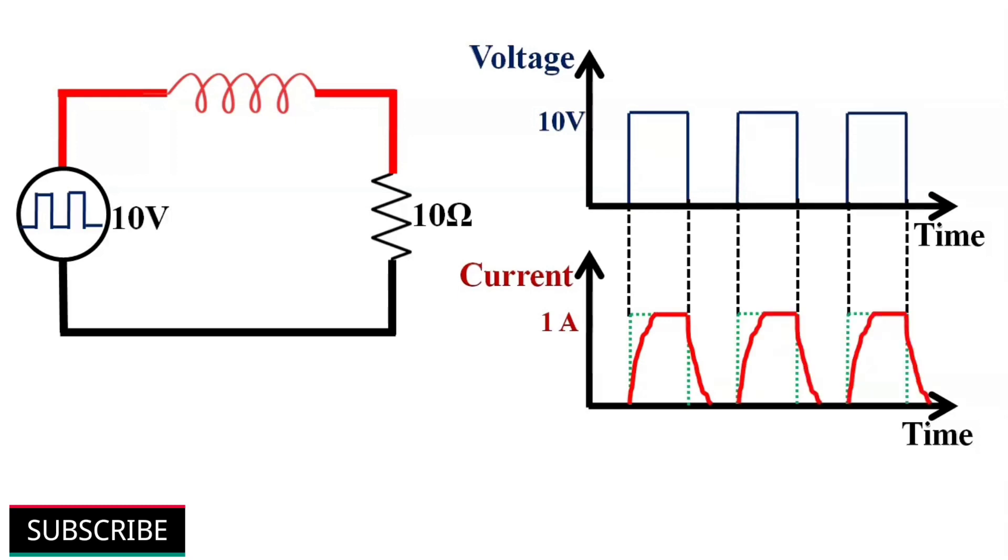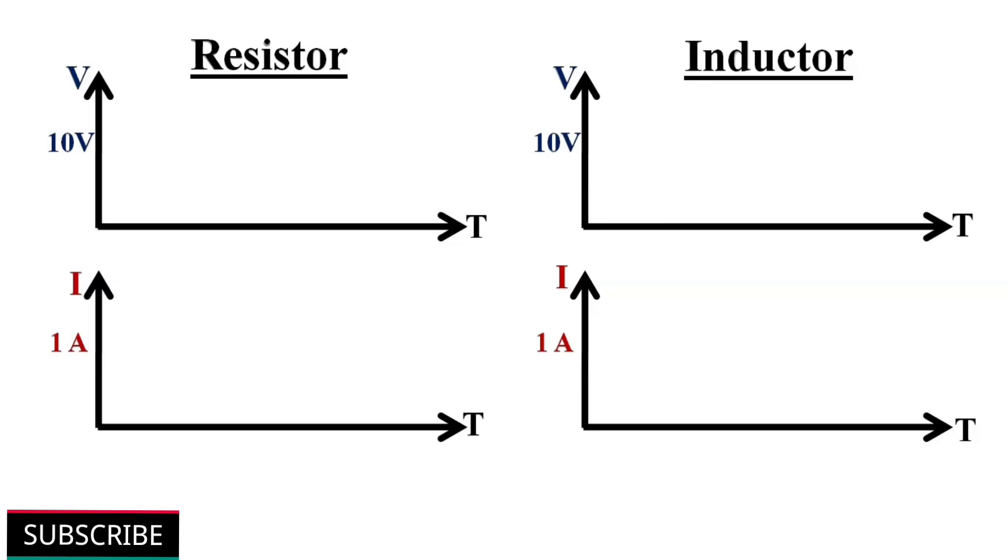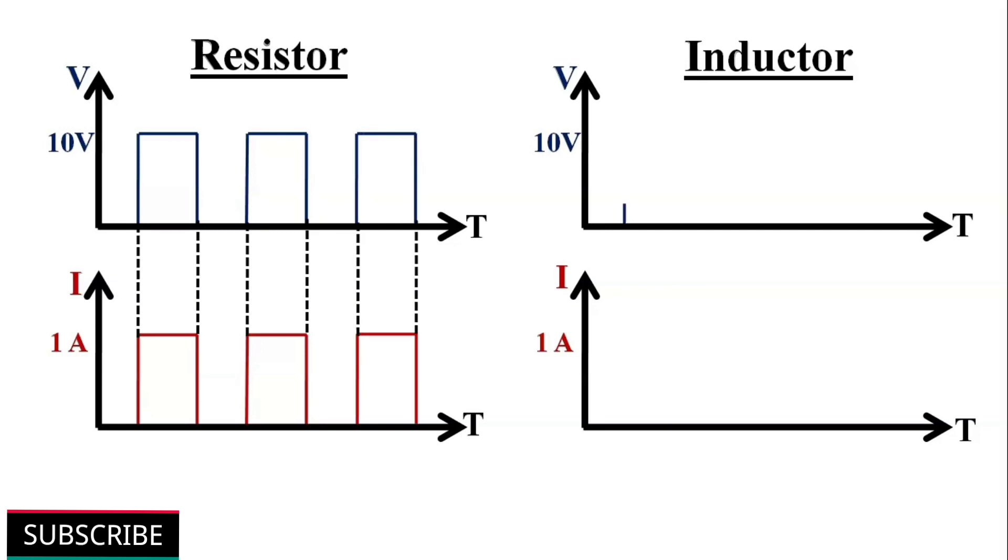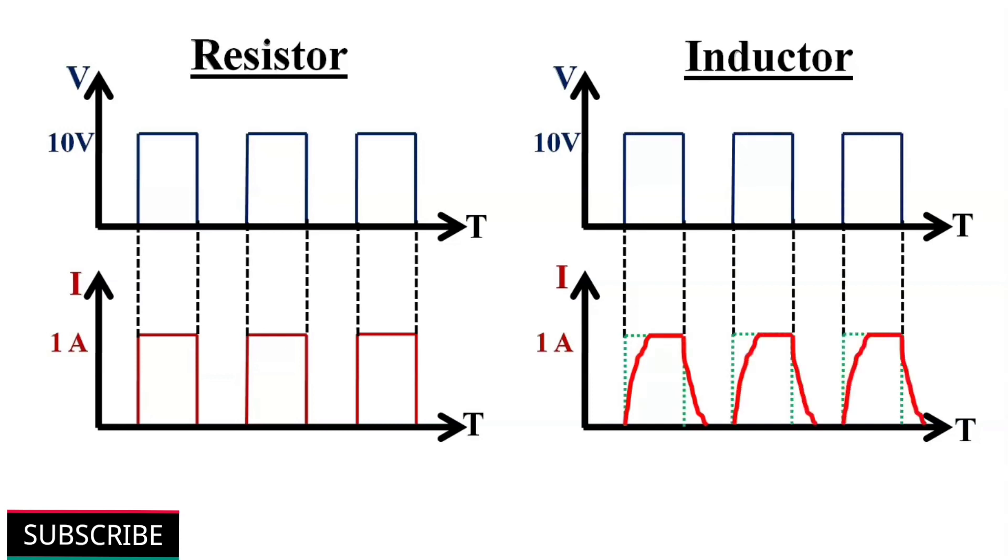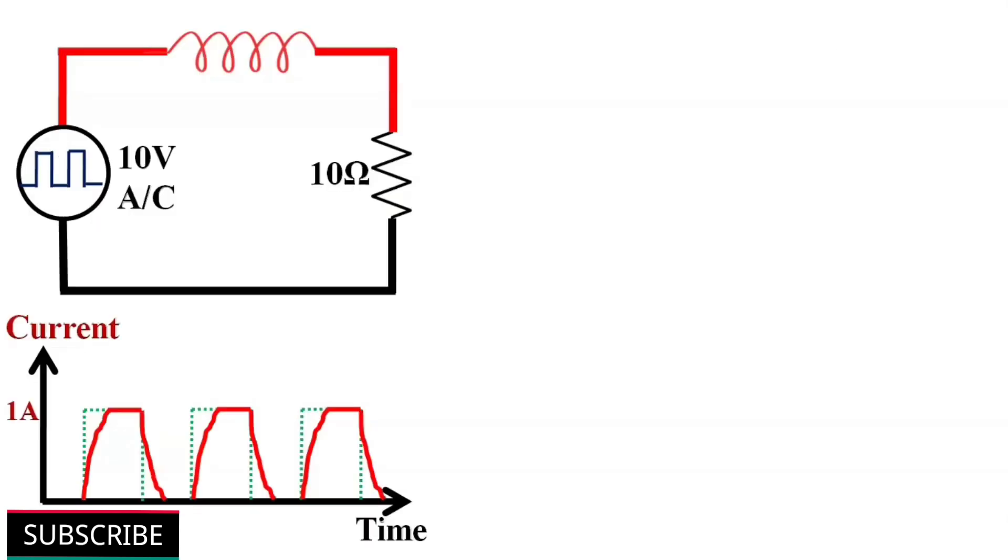This is because the inductor takes a certain amount of time to store and release the energy. In resistors, current will follow voltage irrespective of input frequency. While in inductors, current will lag voltage by a certain time. This lag in current will be more if we raise the frequency of the input signal. In an AC circuit, an inductor constantly stores and delivers energy on each and every cycle.